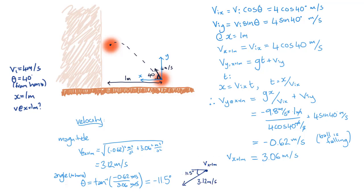In summary, the ball hits the wall with a velocity of 3.12 meters per second, 11.5 degrees below the horizontal.